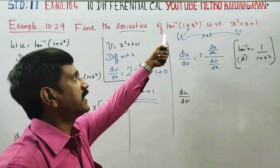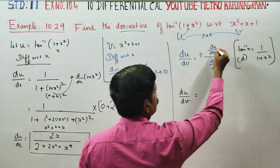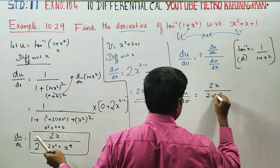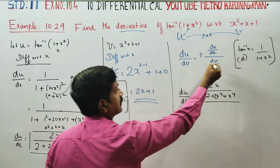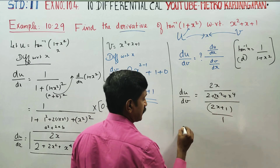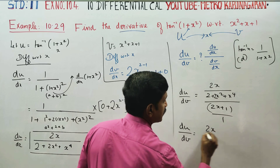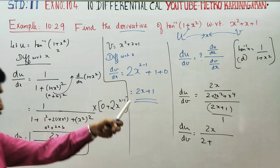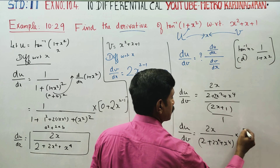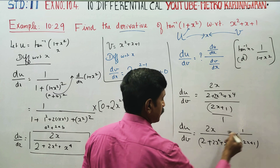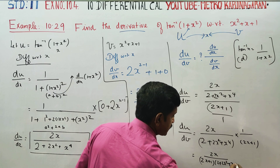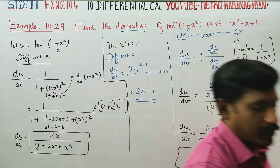So du by dv equals du by dx divided by dv by dx. That is 2x divided by 2 plus 2x square plus x power 4, all divided by 2x plus 1. Taking the reciprocal, du by dv equals 2x divided by (2x plus 1) times (2 plus 2x square plus x power 4). This is the final answer for this problem. Thank you.